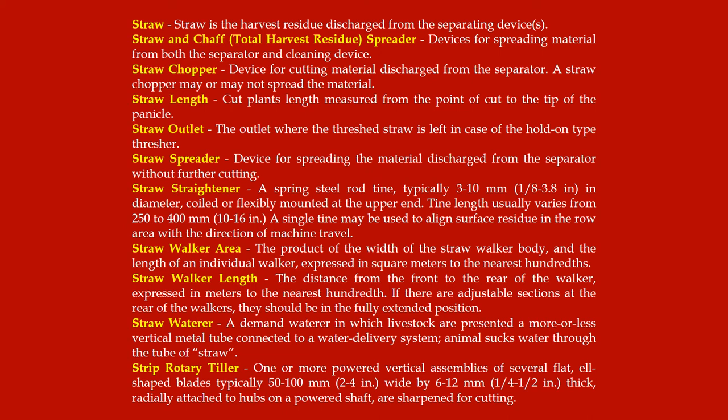Straw walker area: the product of the width of the straw walker body and the length of an individual walker, expressed in square meters to the nearest hundredth. Straw walker length: the distance from the front to the rear of the walker expressed in meters to the nearest hundredth; if there are adjustable sections at the rear of the walkers, they should be in the fully extended position.